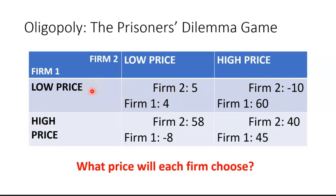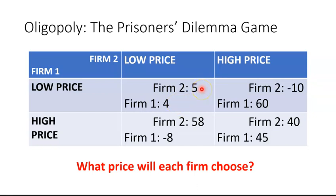If firm one chooses the low price and firm two also chooses the low price, then we end up in this box here, where firm one gets a payoff of four and firm two gets a payoff of five. You could think of that as profits in dollars or millions of dollars or whatever.